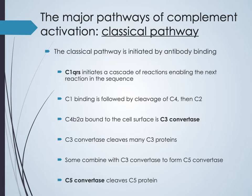Activation of the C1 complex causes activation of C4, then C2. When C4 is activated, it produces a C4A subunit and a C4B subunit. Similarly, activation of C2 produces a C2A and C2B subunit. C4B and C2A then bind together to form what is known as C3 convertase.